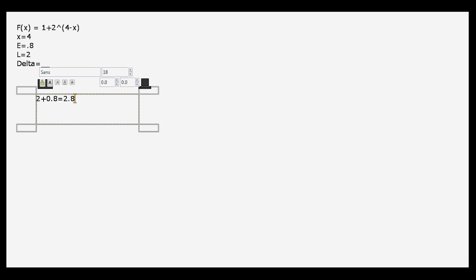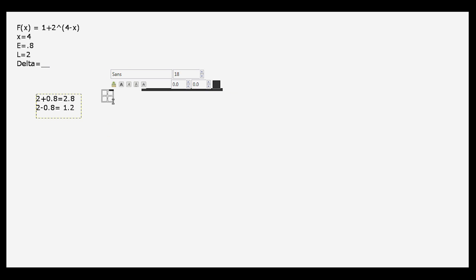Now we find the y bounds of the function by adding or subtracting the epsilon value from the limit that we've just found. This gives us f of x equals 2.8 and f of x equals 1.2 for our y bounds.